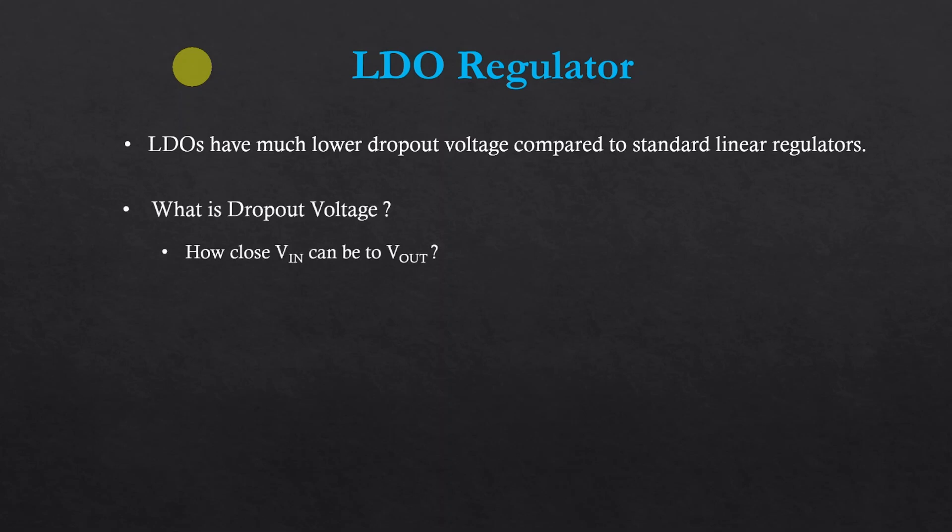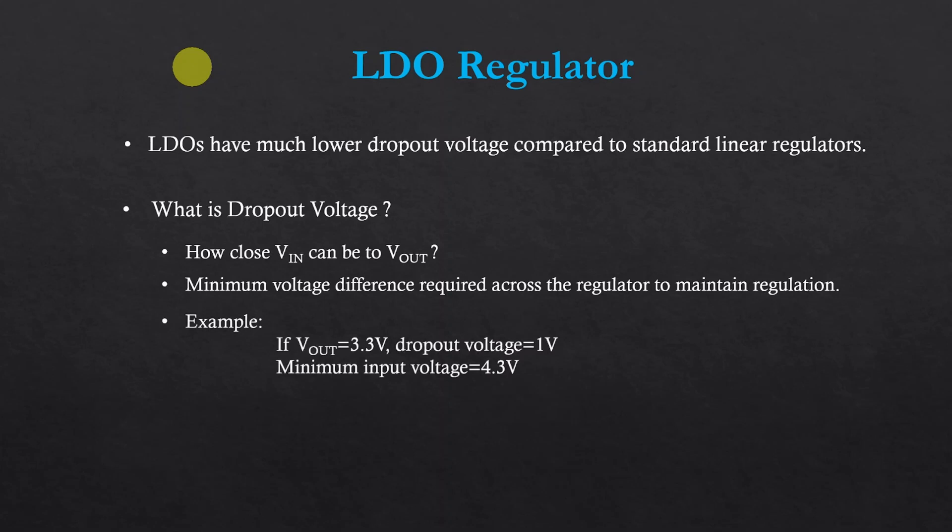Dropout voltage is an indicator of how close your input voltage can be to the output voltage. It is the minimum differential voltage required across the regulator without which the device cannot maintain voltage regulation. If a 3.3V regulator has 1V dropout voltage for a certain output current, then the input voltage to the regulator should be at least 4.3V.